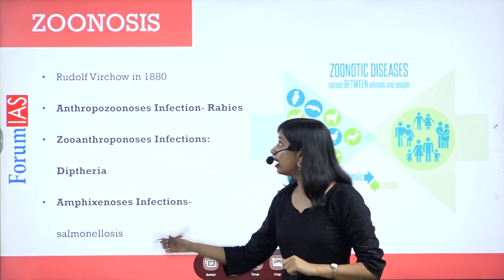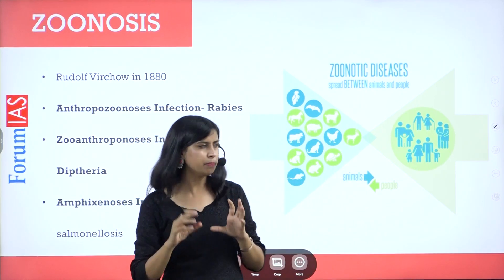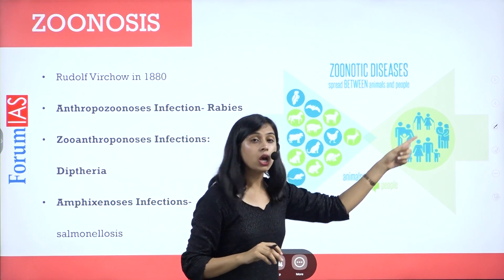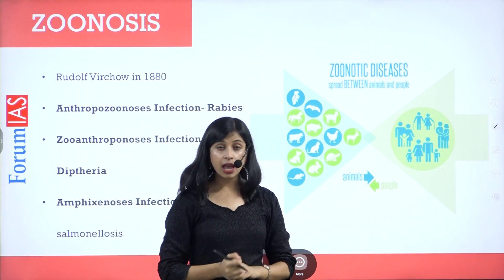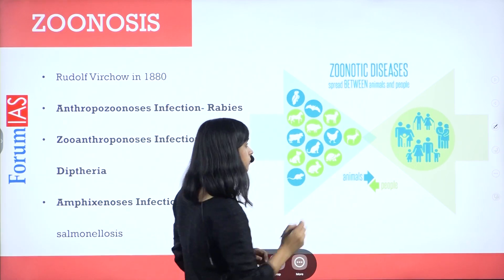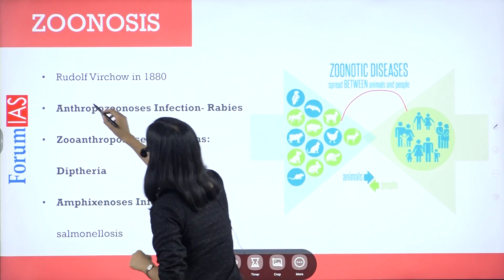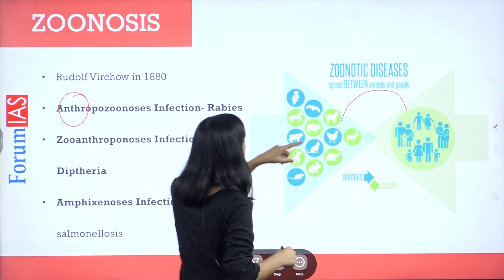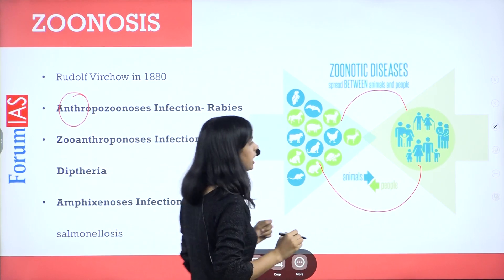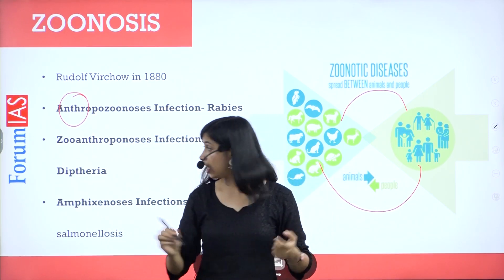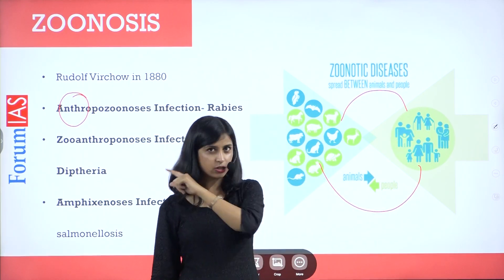Let us understand what a zoonotic disease is. A zoonotic disease, as discussed since 1880, is any disease that can be transferred from animal to human or human to animal. We categorize it in three categories: if it transfers from animal to human, it is called anthropozoonosis; if it transfers from human to animal, it is called zooanthroponosis; and if it is possible both ways, it is called amphizoonosis.